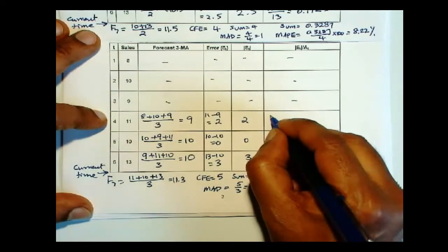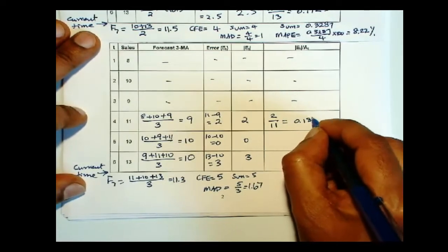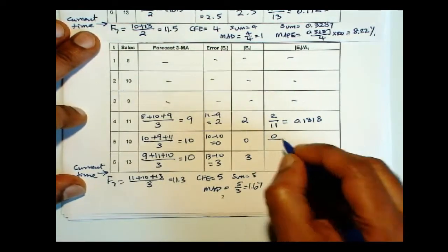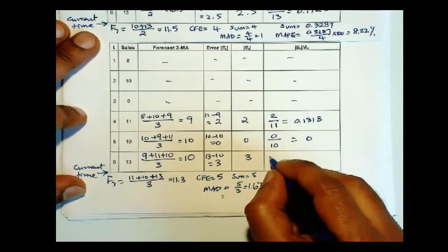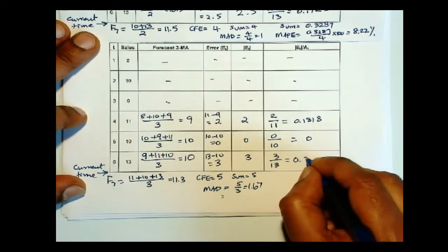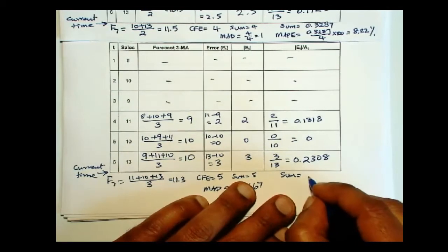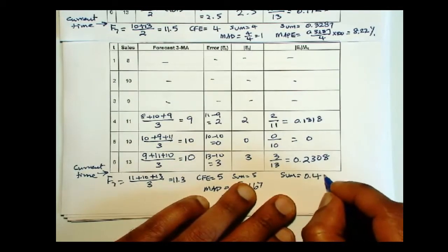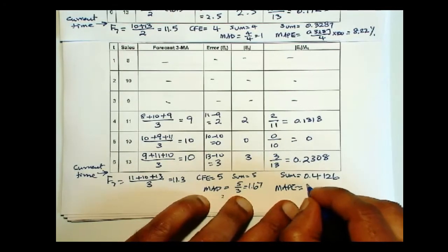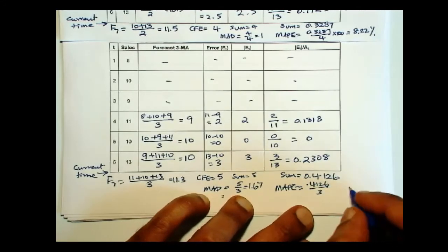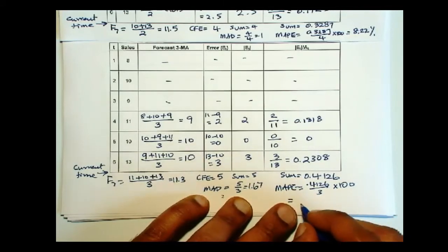And for MAPE, 2 over 11 is 0.1818, 0 over 10, so that's 0, 3 over 13 is 0.2308. And this sum is 0.4126. And therefore MAPE is 0.4126 over 3 times 100 to express that as a percentage. And that is 13.75%.